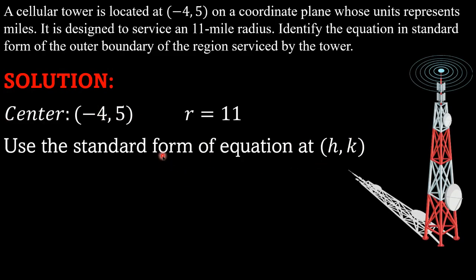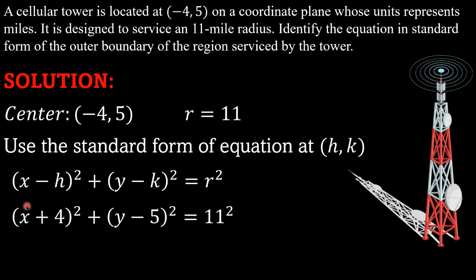The standard form is (x - h)² + (y - k)² = r². Through substitution, we are going to get (x + 4)² + (y - 5)² = 11². But as you can see here, it's positive four.